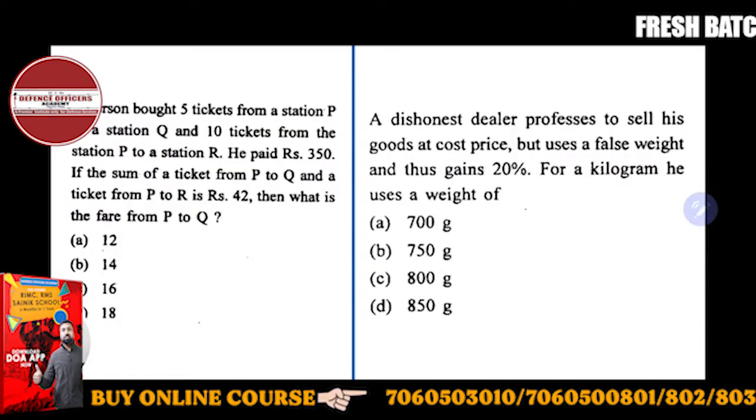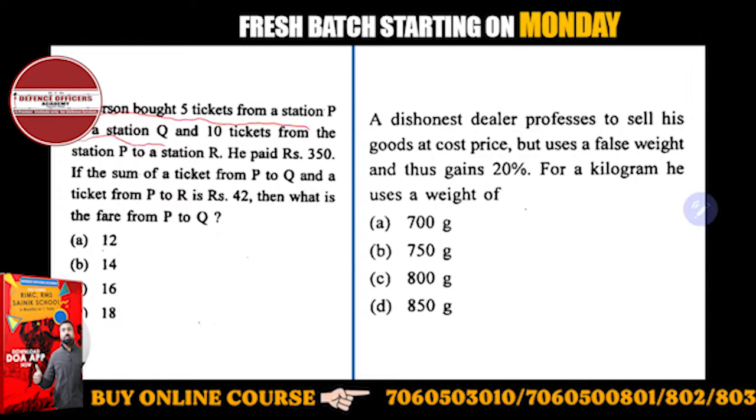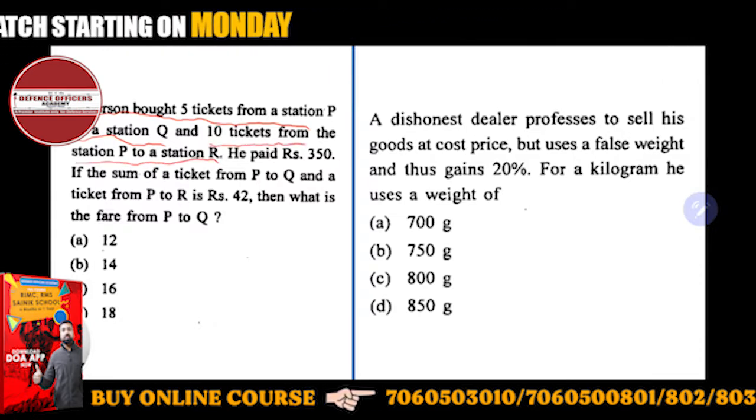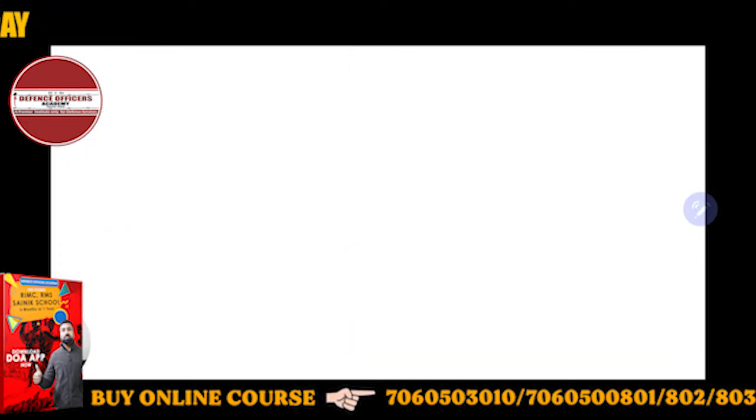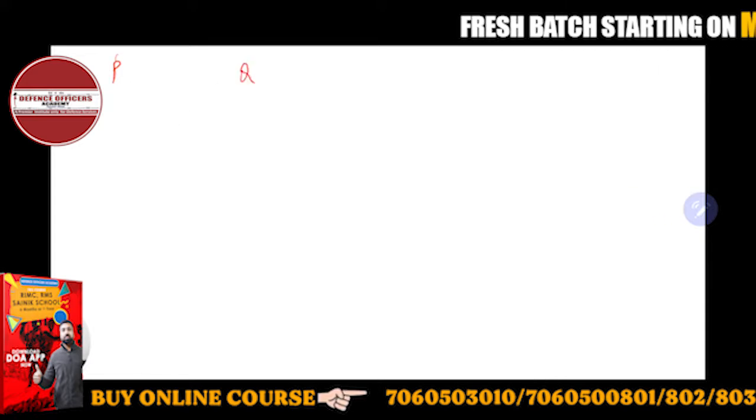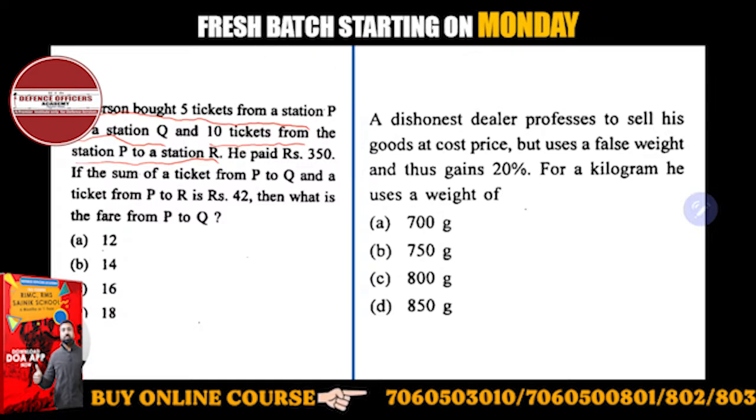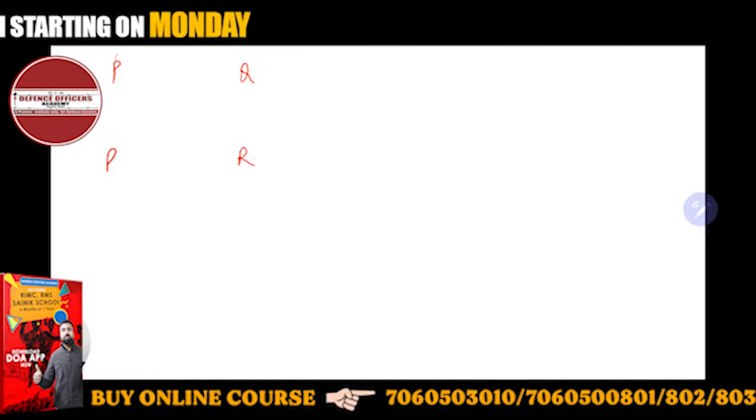The first question is: a person bought 5 tickets from station P to station Q and 10 tickets from station P to station R, and he paid 350 rupees. So suppose we take one station P to Q and the other station is P to R.